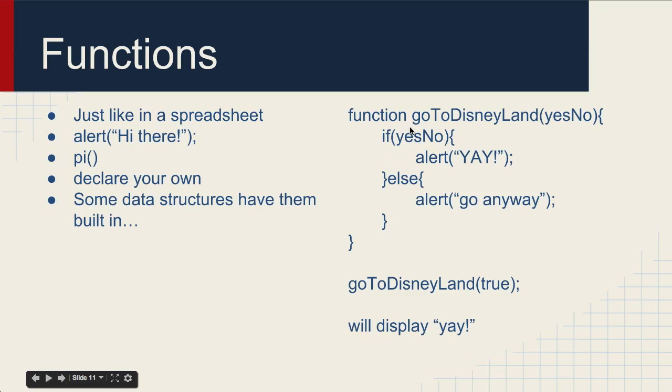On the right is a good example of a function. You declare that it's a function, you give it a name, and then this is a value that will be passed to the function. Just like if you're doing count and you give it a cell range, and then it contains in the function an if structure. So if this is true, display alert. Otherwise display this alert. So then we would say go to Disneyland, pass it true, and it will display an alert box that says yay.